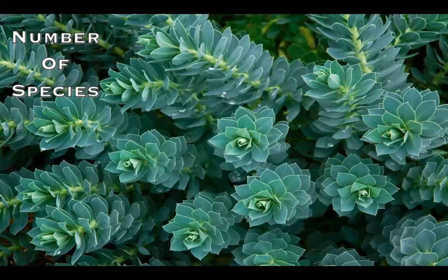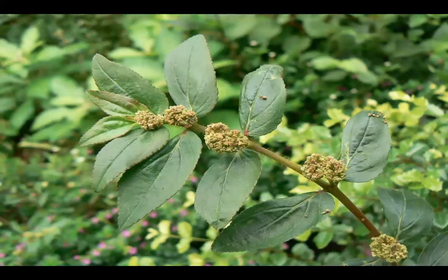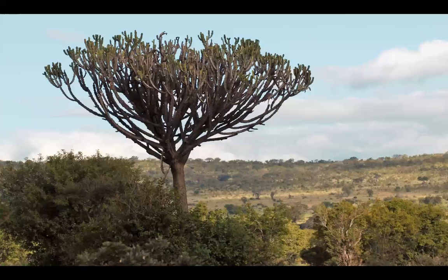All of these species encompass succulents like the Myrtle Spurge, pictured here, herbs like Asthmaweed, pictured here, and trees like the Candelabra tree, as well as many others.